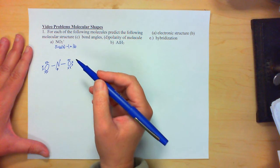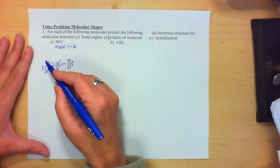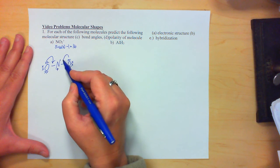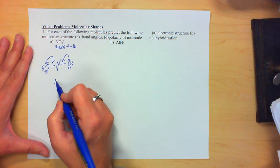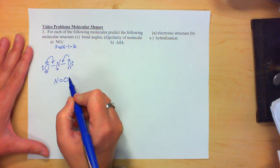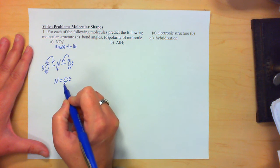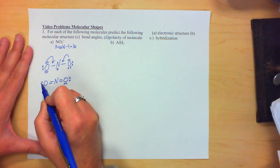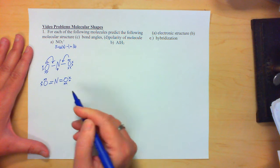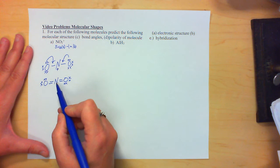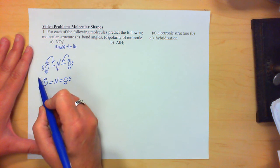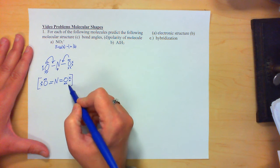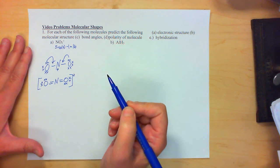Now there are two ways to do this. You can take a pair from each oxygen to share with the nitrogen. That would leave us with this structure here. Oxygen has 8, nitrogen has 8, oxygen has 8. This is an ion, so we would put a positive charge on it.